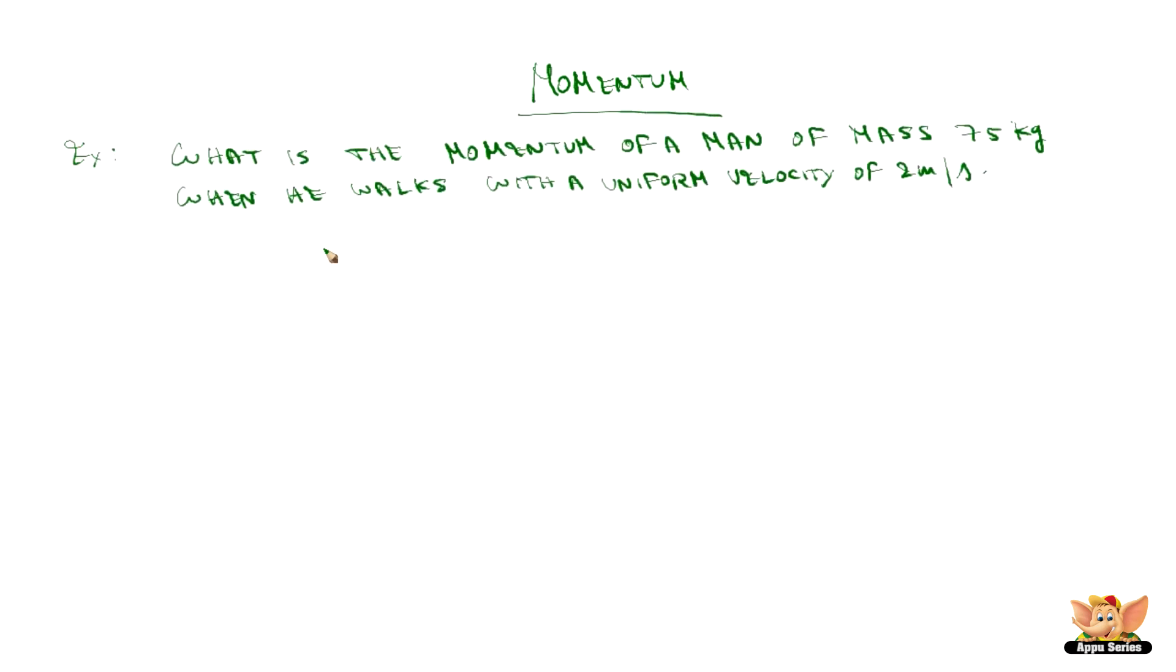What is the momentum of a man of mass 75 kg when he walks with a uniform velocity of 2 meter per second? We know the momentum P is given as mass m into velocity V. So, P is equal to m into V where m is 75 kg and V is 2 meter per second. So, P is equal to 75 into 2 which is 150 kg meter per second.